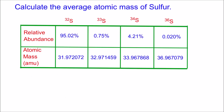Now let's see if you can do one. Calculate the average atomic mass of sulfur. The relative abundances and atomic masses for four isotopes of sulfur have been provided. Take a moment and see if you can figure it out.